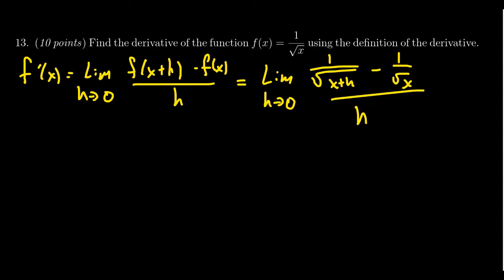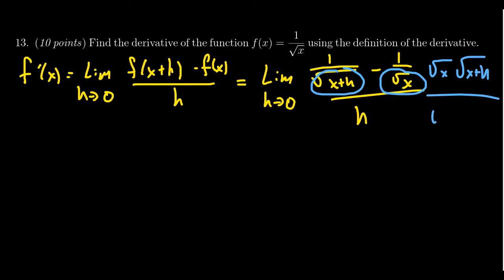Identifying the denominators of the inner fractions, we're going to multiply the outer fraction by their least common multiple — the square root of x times the square root of x plus h — but we have to do it to the top and bottom of the big fraction so that it remains proportional. Don't bother distributing; leave things factored. It's perfectly fine to leave things factored.